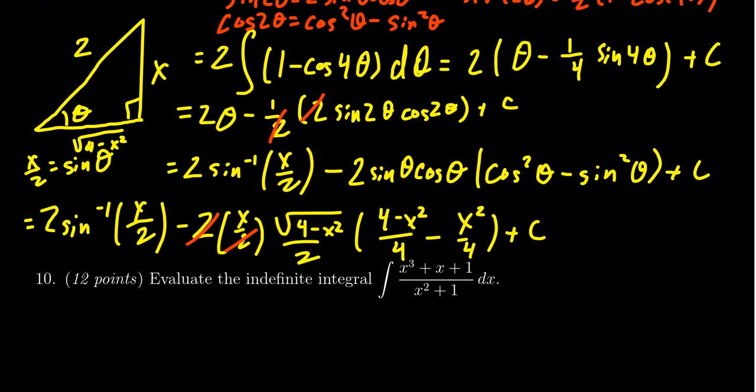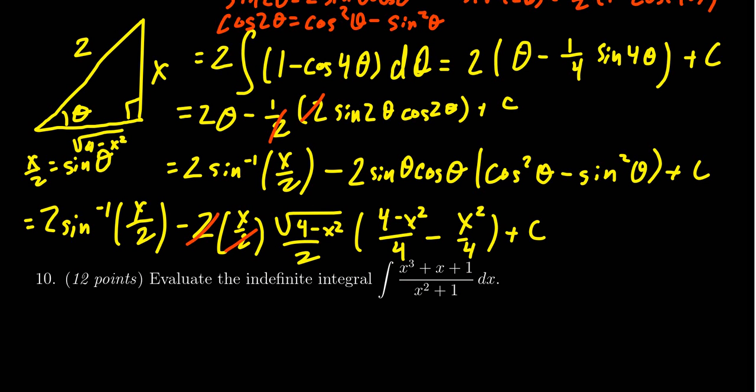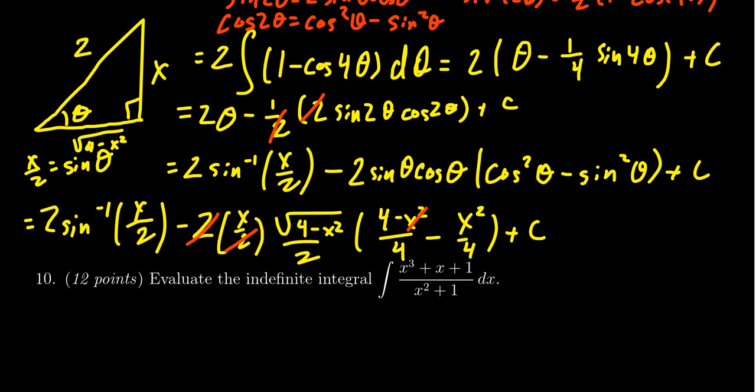I do want to simplify this a little bit more because notice what happens here. You have this x squared over four. That'll cancel with this x squared over four. You end up with a four over four in that situation. Actually, I take that back. This is a minus and a minus. This actually is going to double up. So this will then become four minus two x squared over four, which is the same thing as two minus x squared over two.